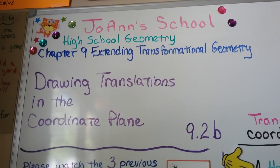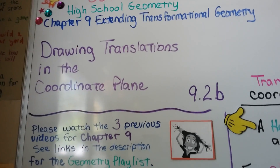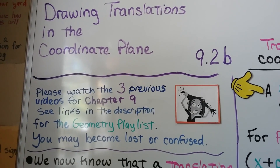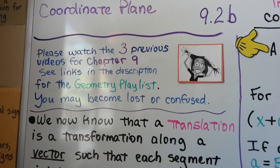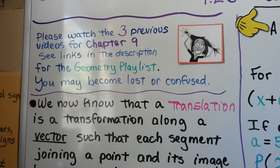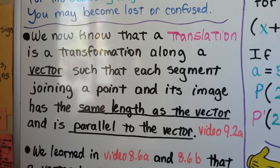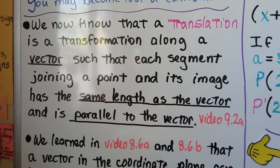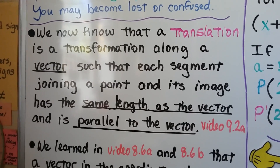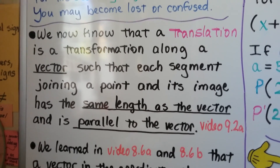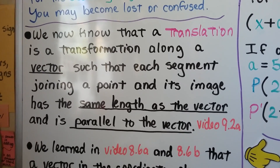Drawing translations in the coordinate plane — we're at 9.2b, which means we have three previous videos for chapter 9 that are in the description in the geometry playlist if you need them. We now know that a translation is a transformation along a vector, and we learned that in the previous video, 9.2a.